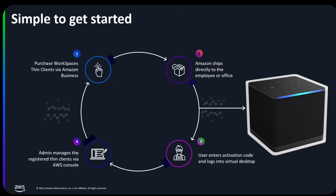So how does this all work? It requires four easy steps. First, admins can purchase the Amazon Thin Client, along with peripheral devices like keyboards and mice, and its USB hub from Amazon Business. Once purchased, the items are shipped directly to the end-user, eliminating any logistical challenges. Third, once received, end-users can instantly activate the device using a one-time activation code. Finally, the admin can start managing the registered device along with associated EUC services with the AWS console.